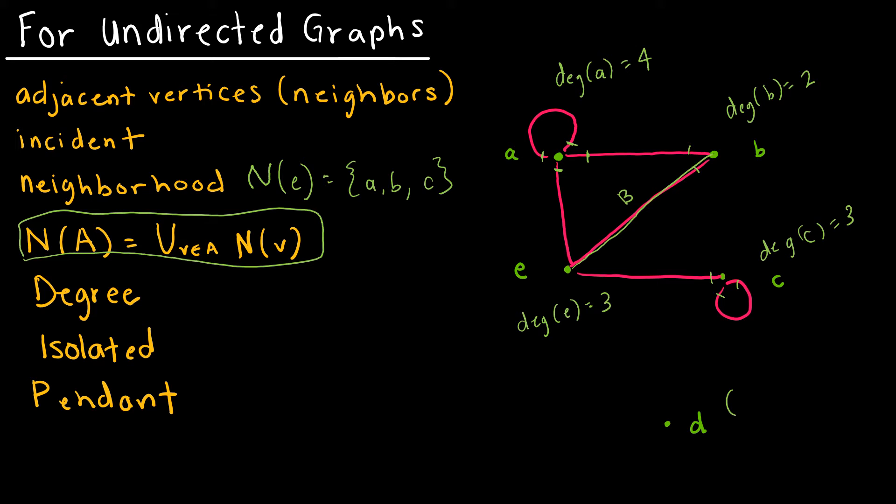And then for poor D down here, the degree of D is obviously 0. So it is a vertex, but it is not connected, and therefore it has a degree of 0 because there are 0 edges coming out of it. We would call D isolated because obviously it's not connected to anything else.